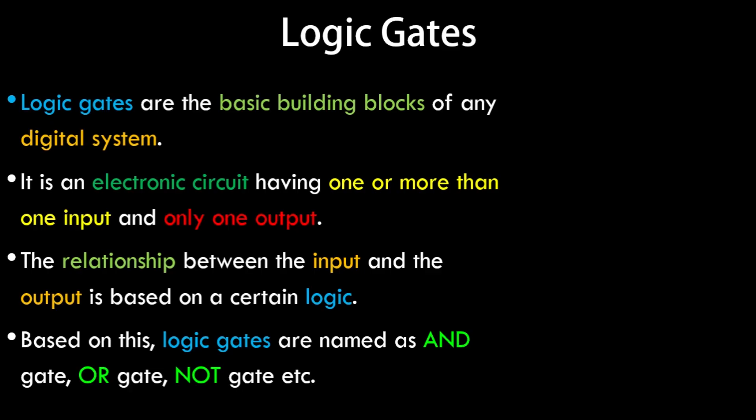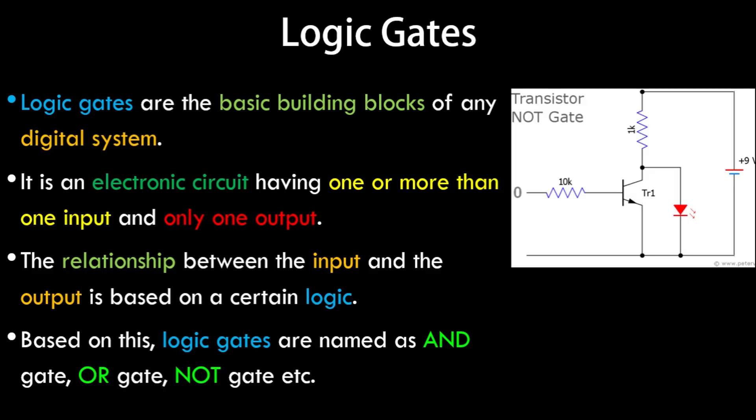There are three basic gates: AND, OR, and NOT gate. We'll also discuss the XOR gate, which does not fall under the basic category but is a very important logic gate. Here's a pictorial description on screen.